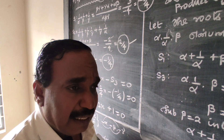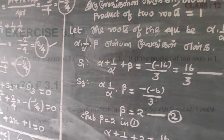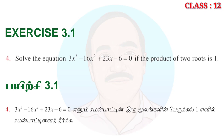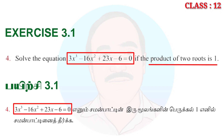Problem No. 4, Background 1. Given: 3x³ - 16x² + 23x - 6 = 0. Two of its roots are reciprocal to each other. Find the roots of the equation.